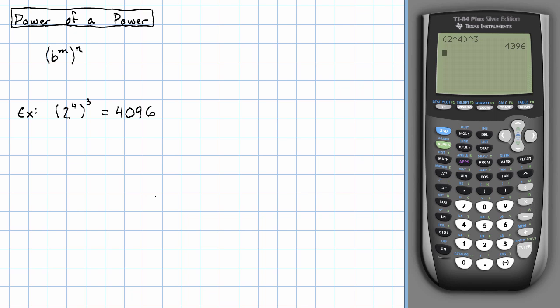If we wanted to work this out by hand, how would we do it? Well, we would do what's inside the parentheses first. So that'll be 4 copies of the number 2, all multiplied together.